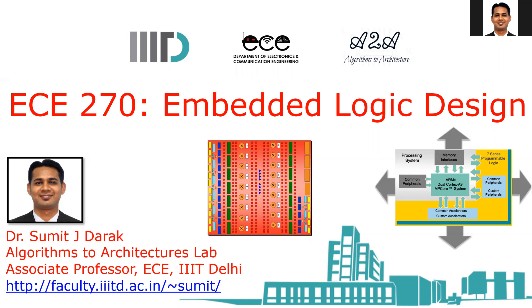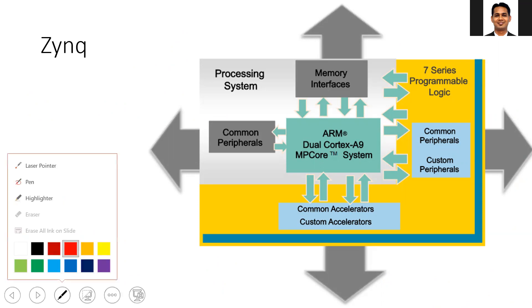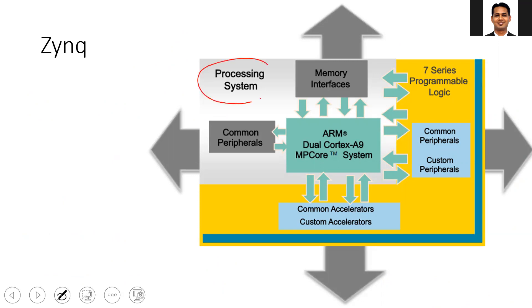As discussed during the lectures as well as the previous lab, in the Zynq SOC you have two parts. One part is your processing system, which is your PS — it is nothing but a dual-core ARM processor. The second part is your PL, which is the programmable logic, which is nothing but your 7-series FPGA. We have already discussed the detailed architecture of the FPGA and in the lecture we are discussing the detailed architecture of your dual-core Cortex-A9 processor.